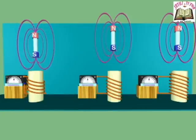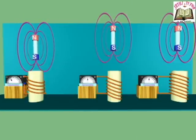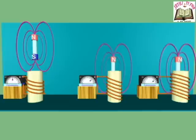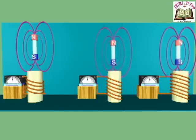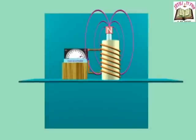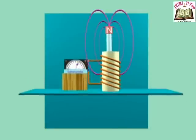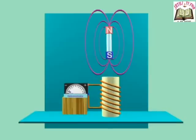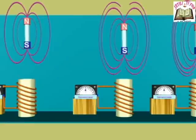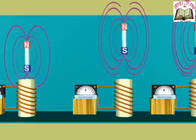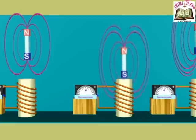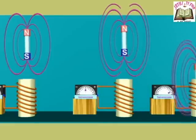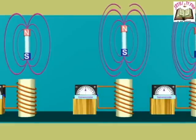Points to be observed during the experiment: When the number of turns of coil increases, EMF also increases. If the bar magnet is kept stationary and the coil is moved, the same results were observed. More the strength of the magnet, more will be the induced EMF. When the magnet is at rest with respect to the coil, no deflection or no EMF is produced.